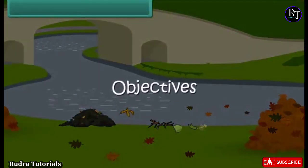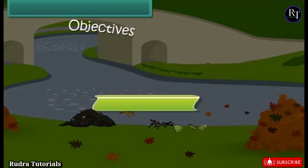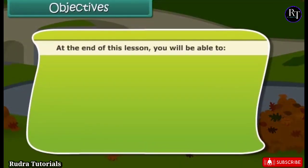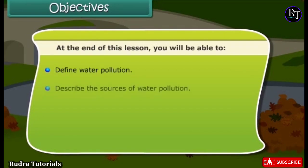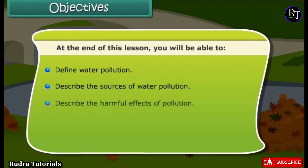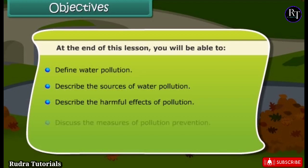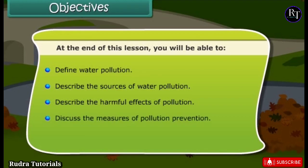Objectives. At the end of this lesson, you will be able to: define water pollution, describe the sources of water pollution, describe the harmful effects of pollution, and discuss the measures of pollution prevention.